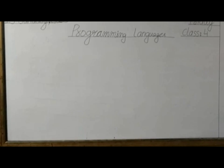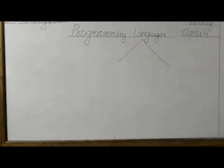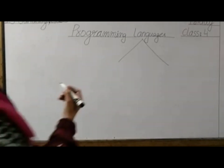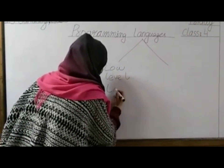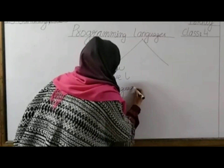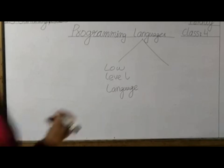So, how many types of language are there? Moise, please tell me how many types of language. There are two types of language. Saad, how many types? There are two types of language. What is the first type? The first type is low-level language. What is the second type? The second type is high-level language.